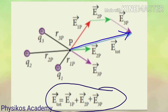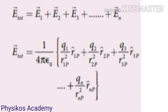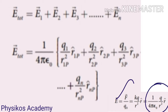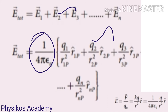For three charges Q1, Q2, Q3, the formula for each individual electric field is: E1P vector is equal to 1 over 4π epsilon-naught, multiplied by Q1 divided by R1P squared, into R1P cap.